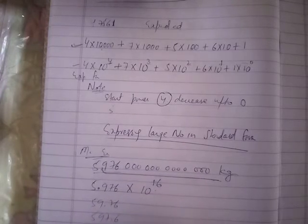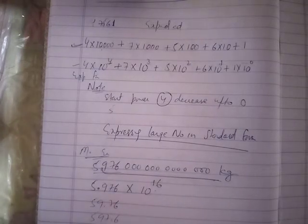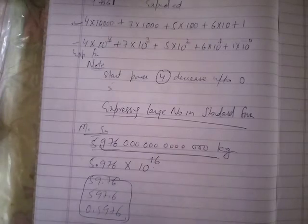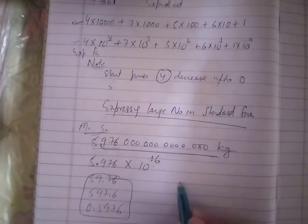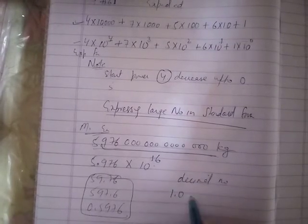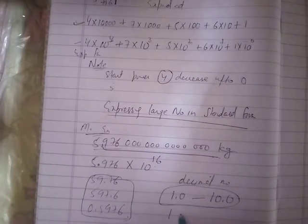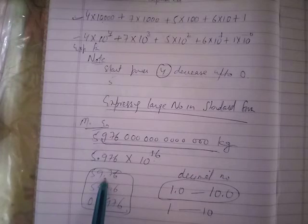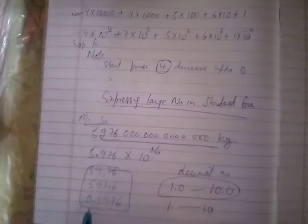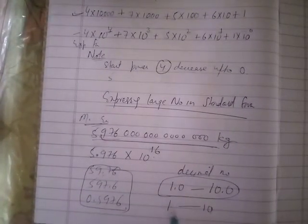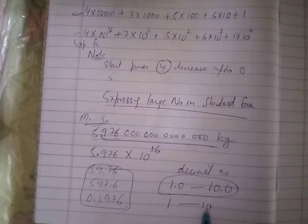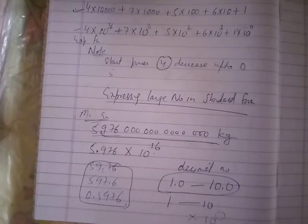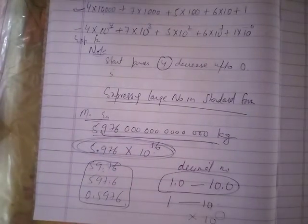Standard form: the decimal number should be between 1.0 and 10. The number should be between 1 and 10. So 5.9 is between 1 and 10. But if it's 59, that's more than 10. Then you multiply by 10 to the power - whatever power is needed. This is the standard form.